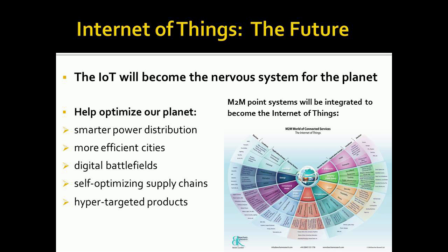What will happen is these silo point-solution systems, M2M systems, are going to start being interconnected. Data from one silo, one domain of information, is going to be compared, contrasted, and combined with information from other domains. We're going to get insights into the world that we never had before. It will become the nervous system for the planet and give us more capabilities and efficiencies in ways we can't even imagine right now.